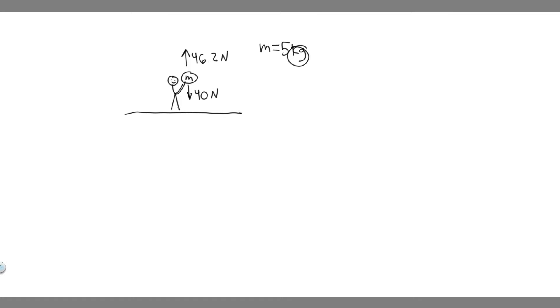If the astronaut exerts an upward force of 46.2 newtons on the rock, what is its acceleration? So the first thing you always want to do is draw what's going on. So we have this astronaut, they're holding this rock.